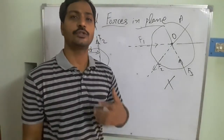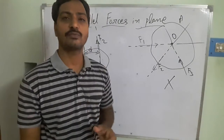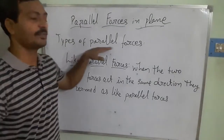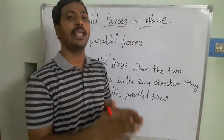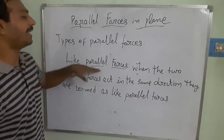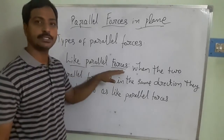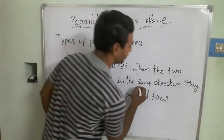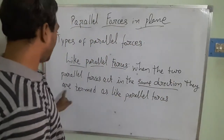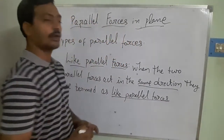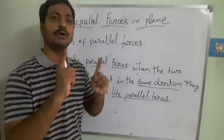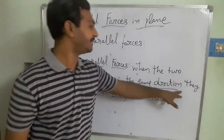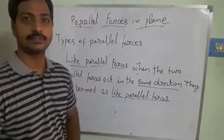In parallel forces we have different types: equal parallel forces, unequal like parallel forces, and unequal unlike parallel forces. After seeing the definition of parallel forces — when the lines of action of two forces do not intersect — we look at like parallel forces. When two parallel forces act in the same direction, they are called like parallel forces. There must be a minimum of two forces acting in the same direction.